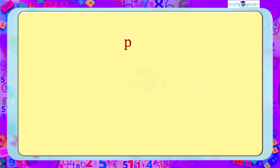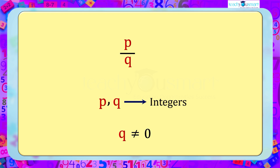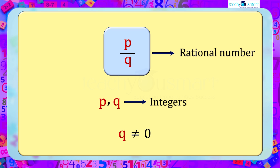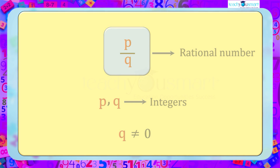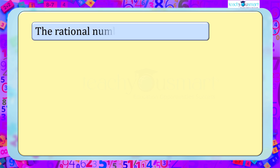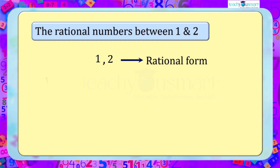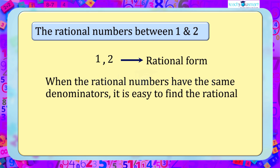We know that there are numbers in the form of p by q, where p and q are integers and q is not equal to zero, and they are called rational numbers. So if we write these integers in rational form, then we can find the rational numbers between them. Now let's try to find the rational numbers that lie between one and two. For that we have to write one and two in rational form, and when these rational numbers have the same denominator it is easy to find the rational numbers between them.